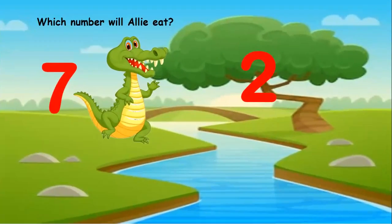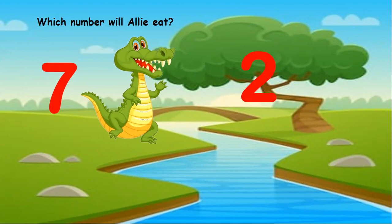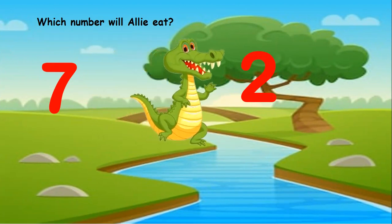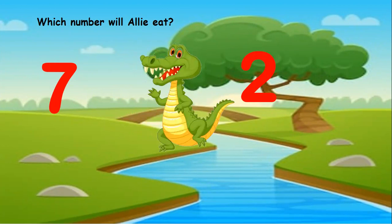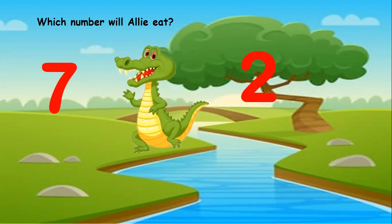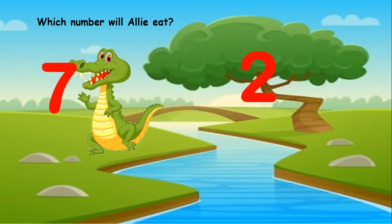Now children, it's your turn to guess — which number will Ellie eat: seven or two? Yes, you are right! He is going to eat number seven because it is the greater number.